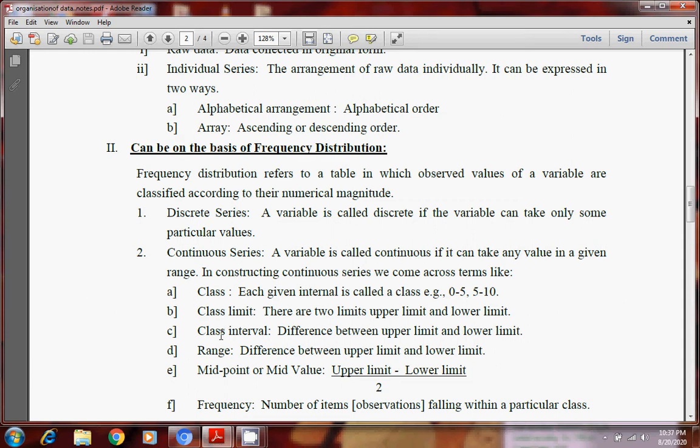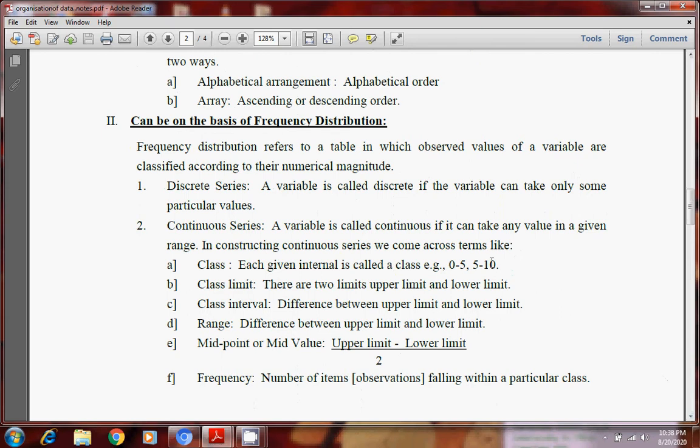Now there are some terms used in these series. Class, each given interval is called class like 0 to 5, 5 to 10. This is called class interval. Class limit is always having upper limit and lower limit. Upper limit, if we take this interval, upper limit is 10, lower limit is 5. Upper limit is 5, lower limit is 0. Then class interval, difference between upper limit and lower limit.